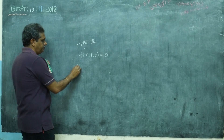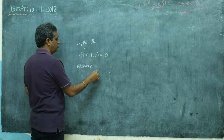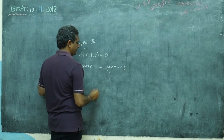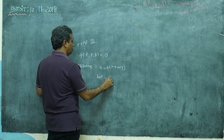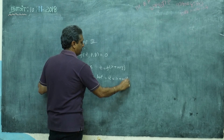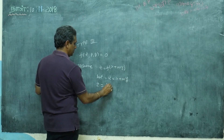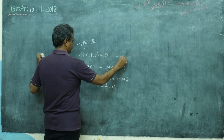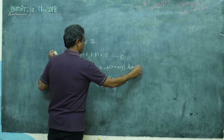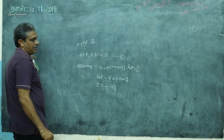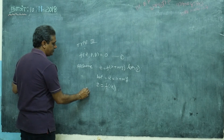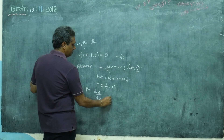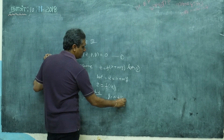Here, what you will now assume: the solution is z equals f of x plus ay. Put u equals x plus ay, then z becomes f of u. After doing some manipulation, what you will get is: P equals dz by du, and q equals a times dz by du.